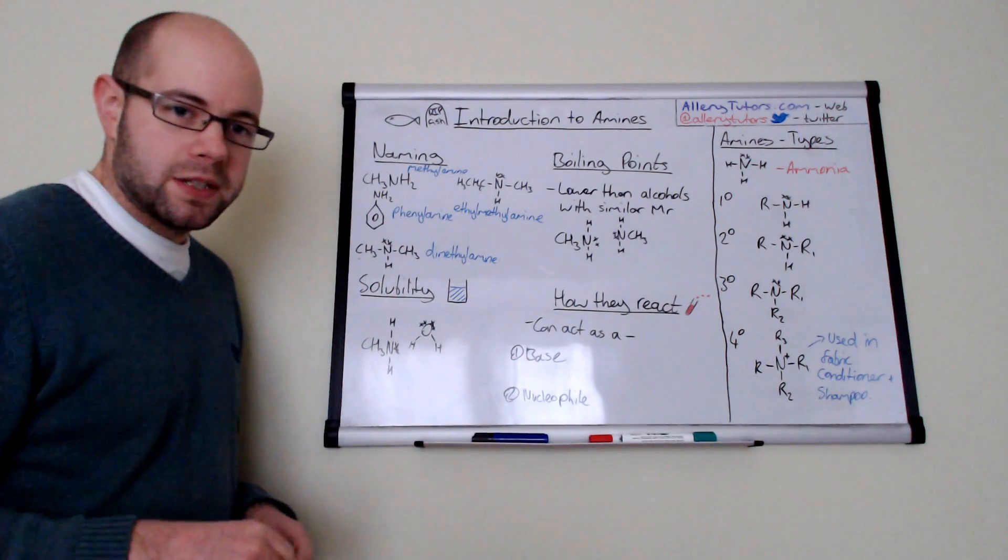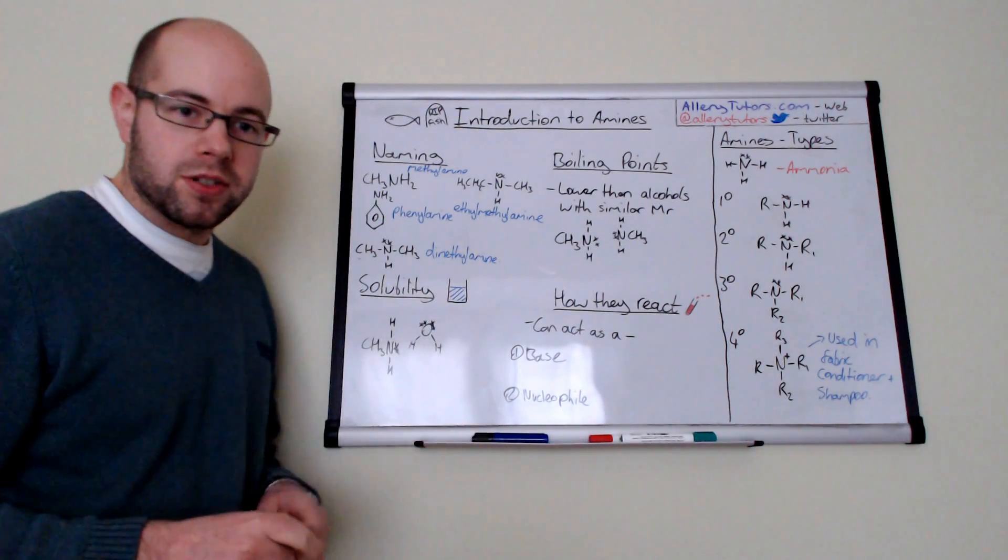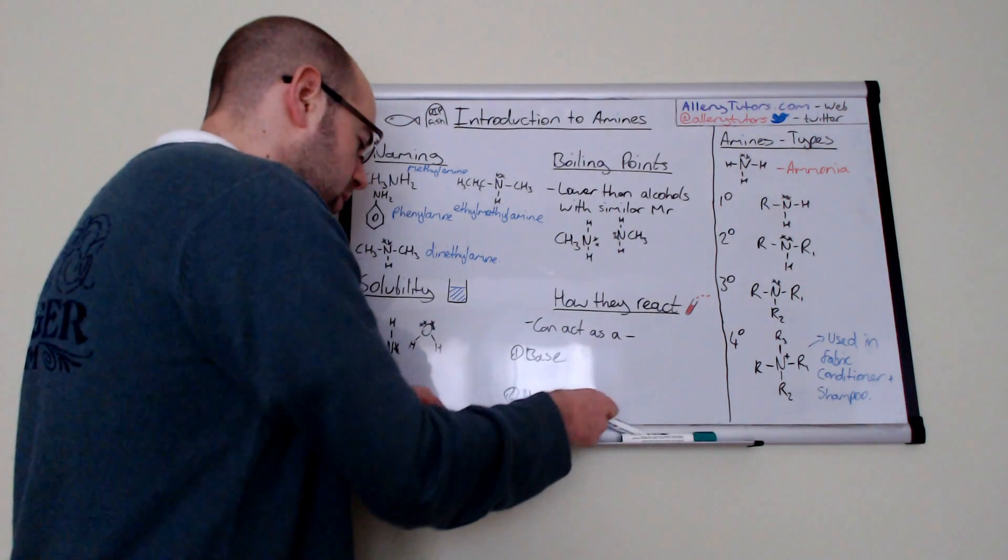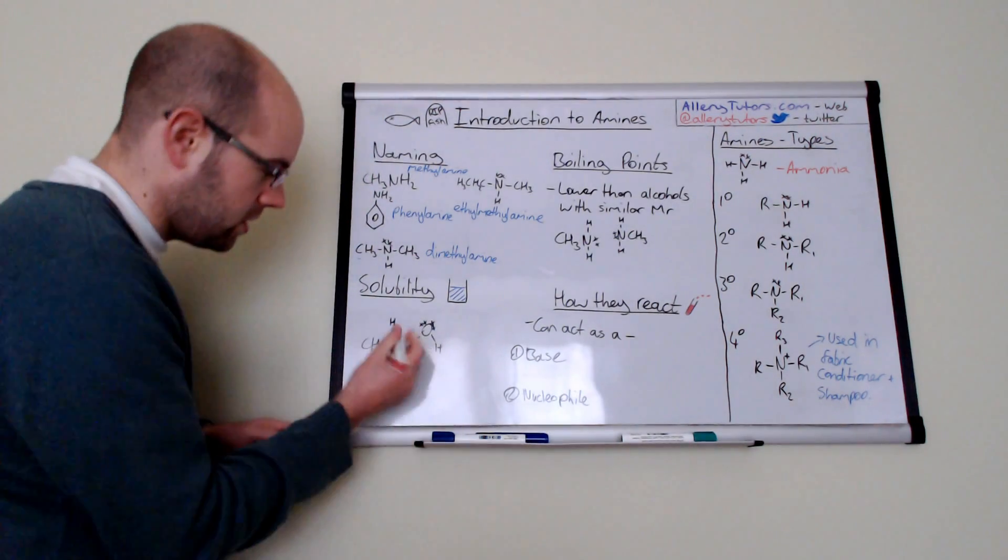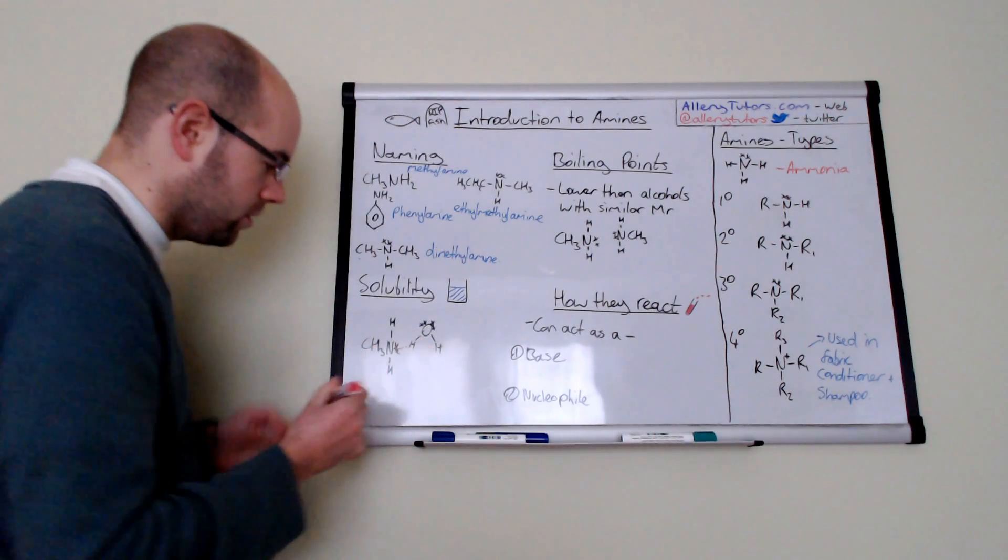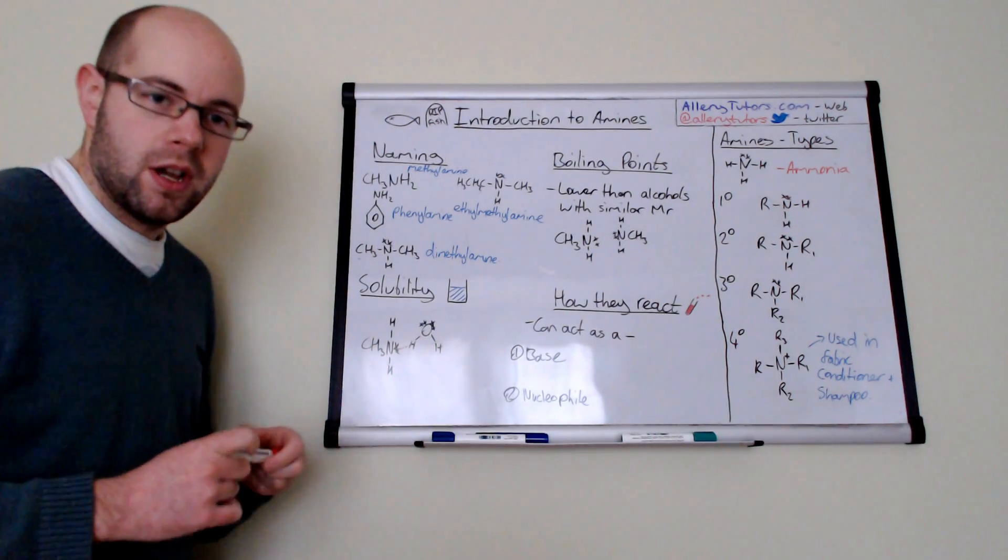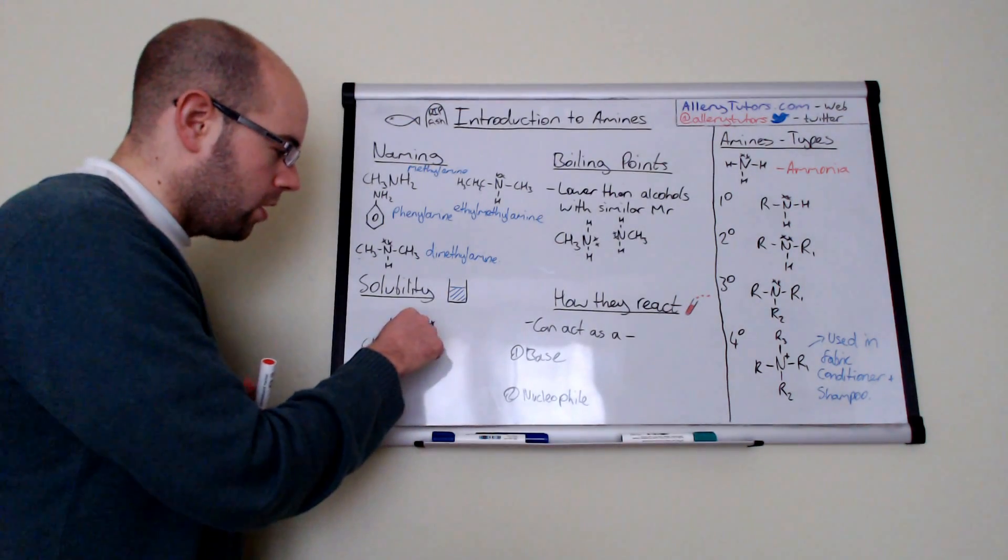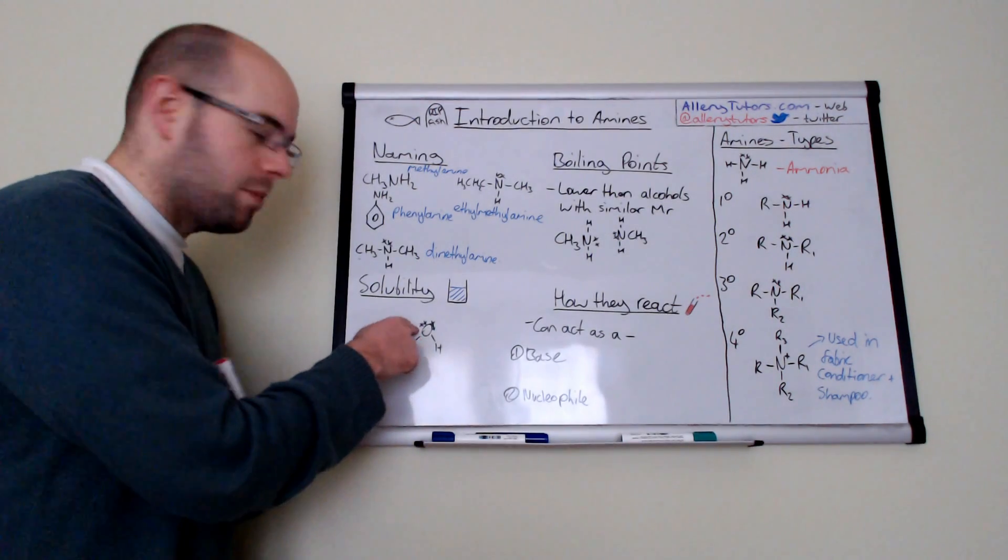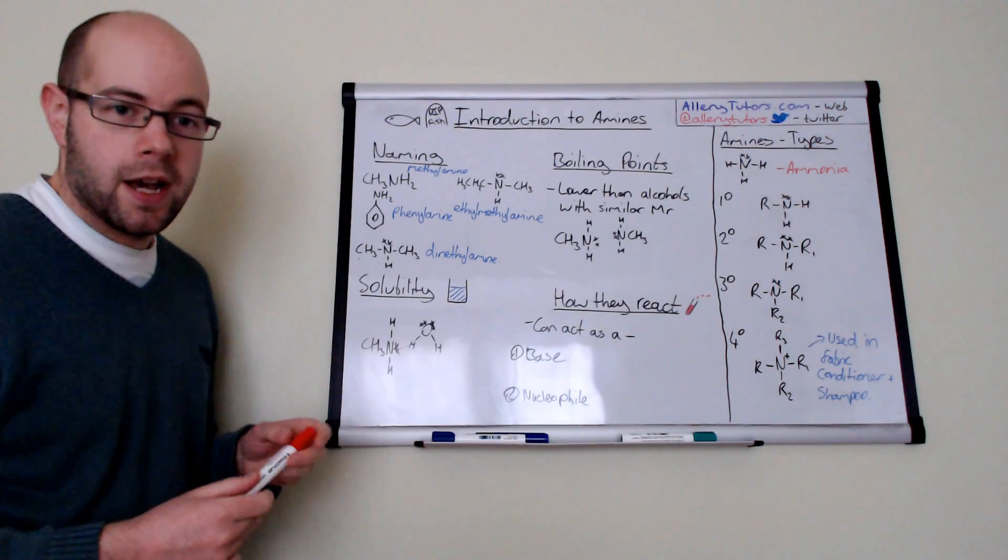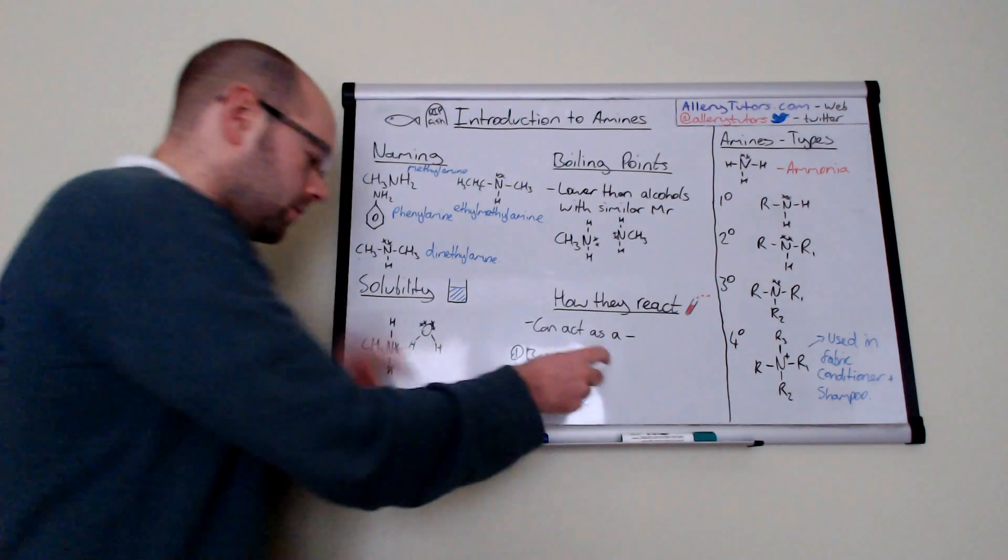Okay, in terms of solubility, amines are generally soluble. And the reason why is because they can hydrogen bond with water. So you can see those are lone pairs of electrons. And the nitrogen can hydrogen bond with the hydrogen on water and vice versa. So the oxygen as well and the lone pairs on the oxygen can actually interact with the hydrogen on the amine.